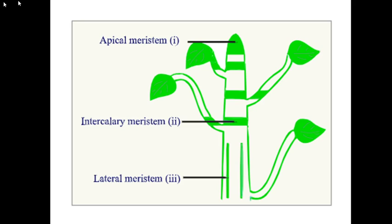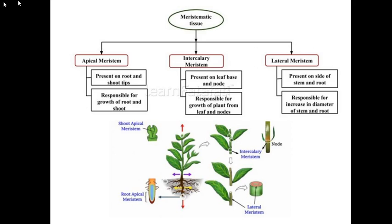The positions are: apical, which is the tip of the stem and roots; intercalary, which is at the base of the leaves and the internodes; and lateral, which is within the stem and the roots. Take a screenshot of this slide and complete your short notes regarding meristematic tissues — what the tissues are, their types, their location, and their functions.